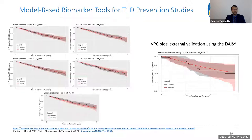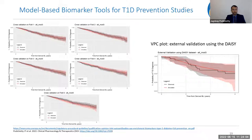Model validation and diagnostics were performed using VPC-style plots. Five-fold cross-validation results show the Kaplan-Meier estimate with 95% prediction intervals alongside the model prediction and its 95% prediction interval. External validation using the DAISY dataset showed good graphical agreement. Ultimately, the models provided sufficient evidence to support the EMA qualification opinion.